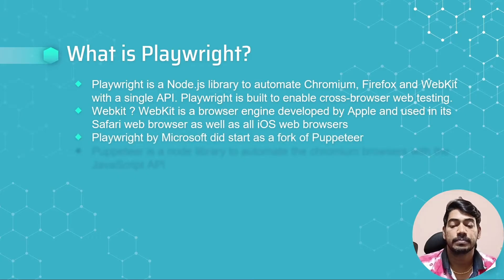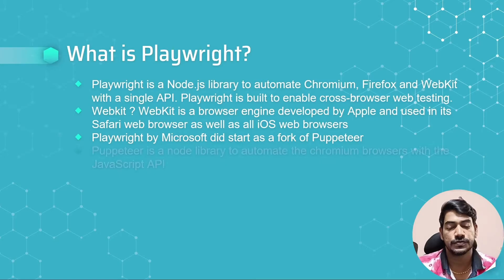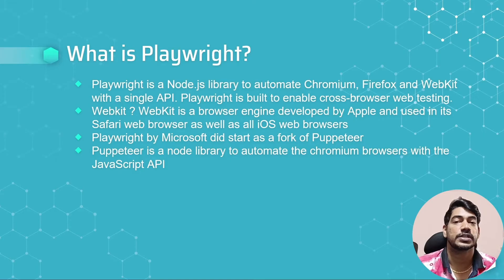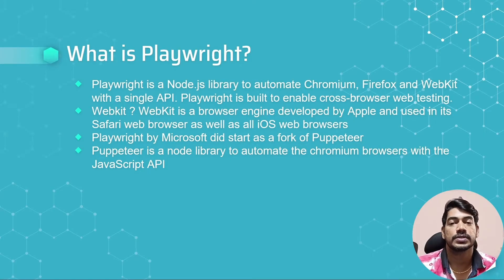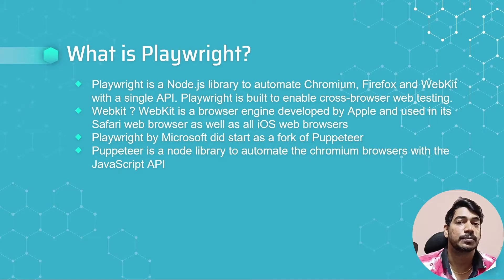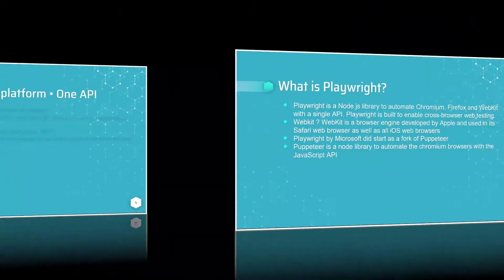Playwright by Microsoft started as a fork of Puppeteer. Puppeteer is a Node library to automate only Chromium browsers with the JavaScript API, and it mostly runs in headless mode — meaning you cannot see the UI. Playwright, however, supports both headless and headed mode, which we will talk about in upcoming lectures.